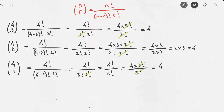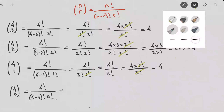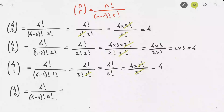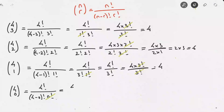For C(4,0), that equals 4! over (4 minus 0)! times 0!. Remember, 0! equals 1, so we cross it out. We're left with 4! over 4!, since 4 minus 0 is 4. There's no need to calculate further — we have the same factorial on top and bottom, so this simply equals 1.